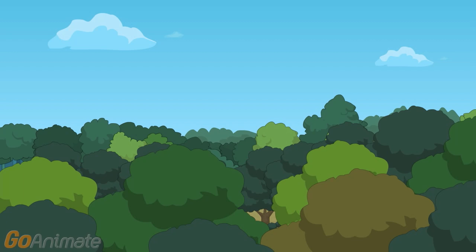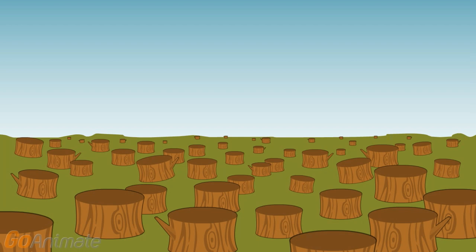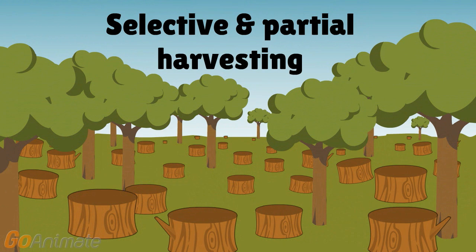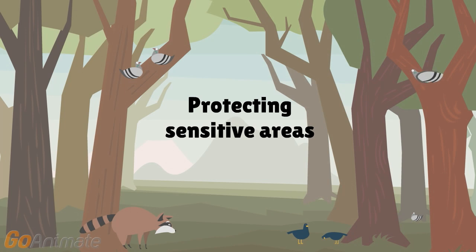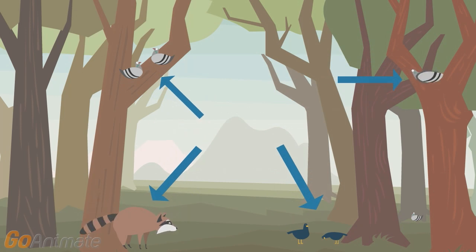Deforestation has many negative impacts on the environment, but it can't be completely stopped because humans rely on it so heavily. So what can we do? One way to fix this problem is to change how we harvest trees. Instead of cutting down every single tree, we can selectively choose trees to cut and leave others to help maintain some of the ecosystem functions. Protecting and conserving ecologically sensitive areas is another way to decrease impacts of deforestation. By selectively choosing regions, we can conserve old-growth forests and also protect endangered species habitats.